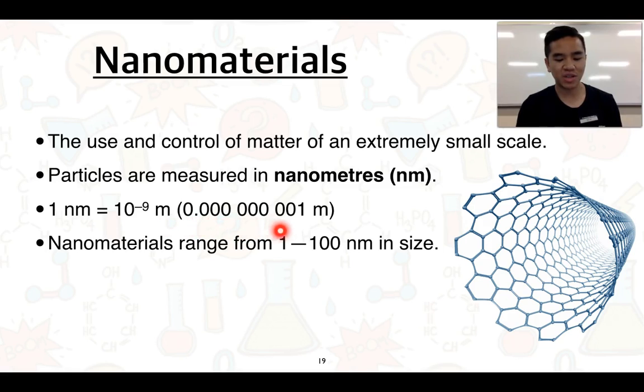Which is equivalent to this number as a decimal in meters. So you can see it's extremely small. Nanomaterials generally range from about 1 to 100 nanometers in size. And we're generally talking about the size of individual atoms, so you can imagine that we are manipulating materials on a very, very small scale.